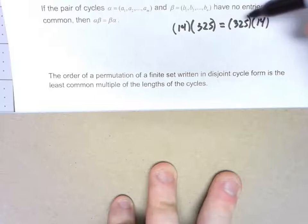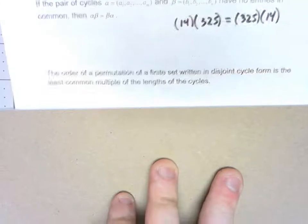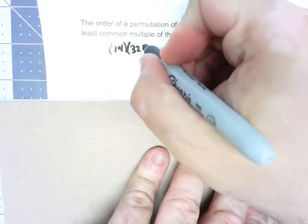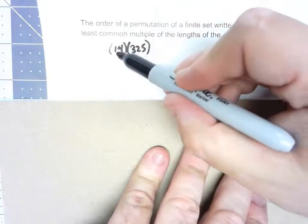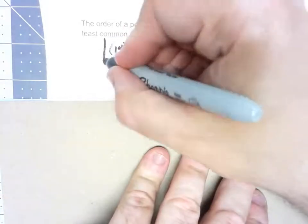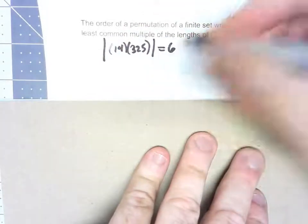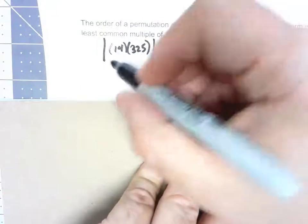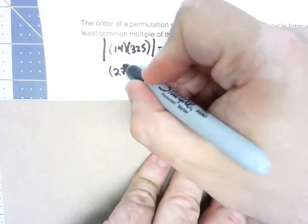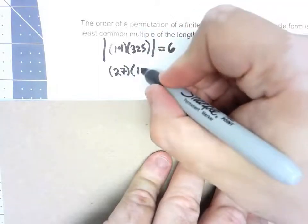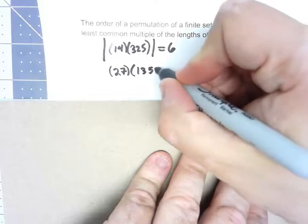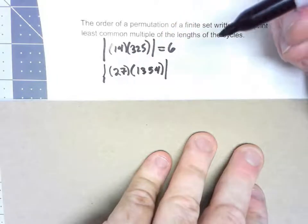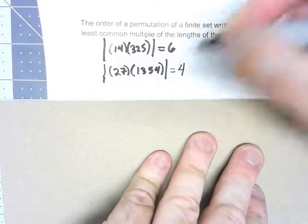So here, once again, let's take a look at this (1,4)(3,2,5) permutation. We've got a length 2 and a length 3. Obviously, the least common multiple of those things would be 6. So the order of that cycle would be 6. If I had something that was (2,7) times (1,3,5,4), I've got a length 2 and a length 4. The least common multiple of 3 and 4 gives me an order of 4.